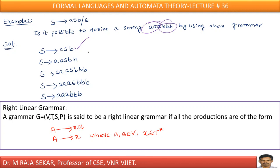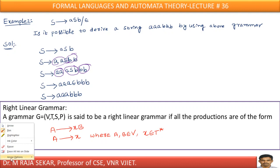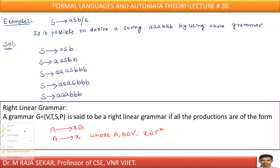I need three A's and three B's. So I write A on the left and B on the right. In the place of S again, I write aSb — giving two A's, S, two B's. In the place of S again, I write aSb — giving three A's, S, three B's. Since S goes to epsilon, I replace S with epsilon. Therefore what we get is triple-a triple-b. This string is generated by this particular grammar.